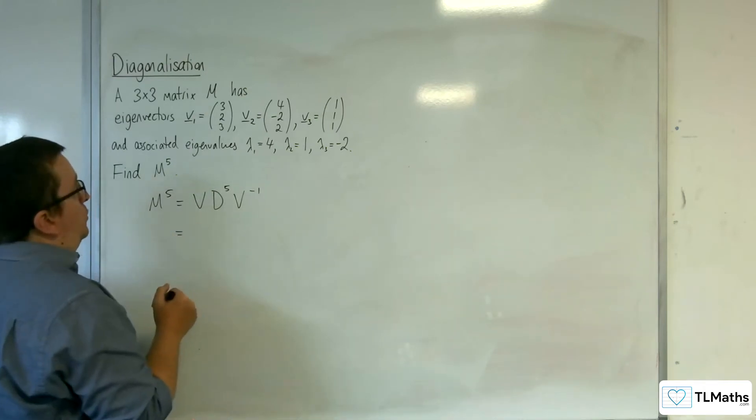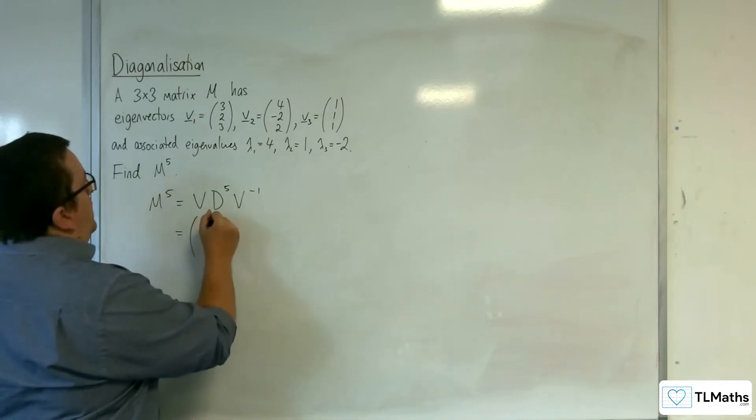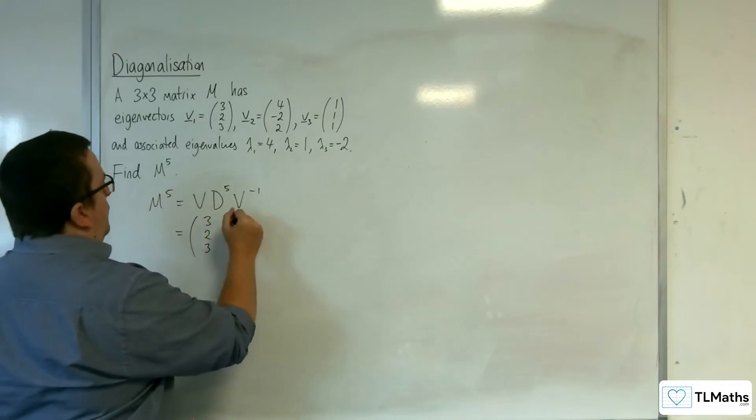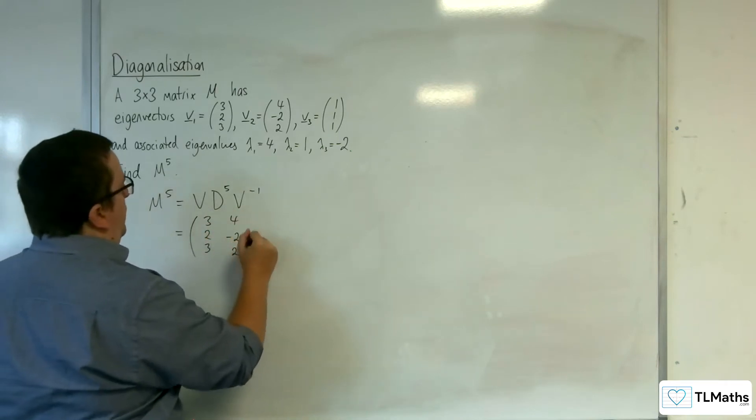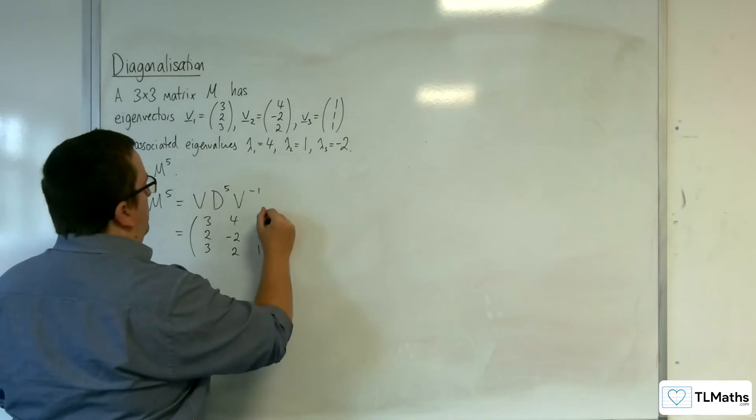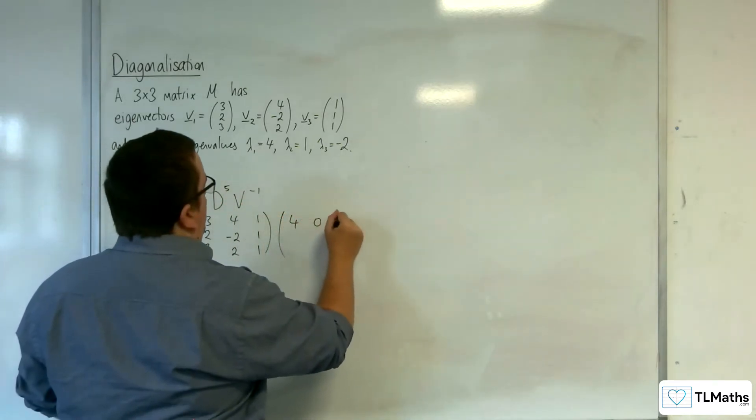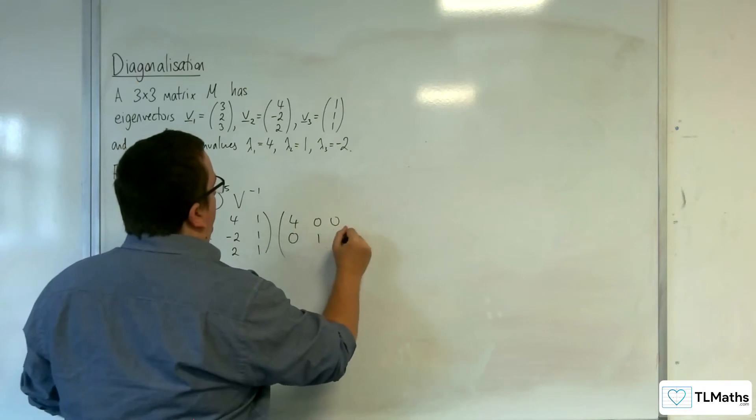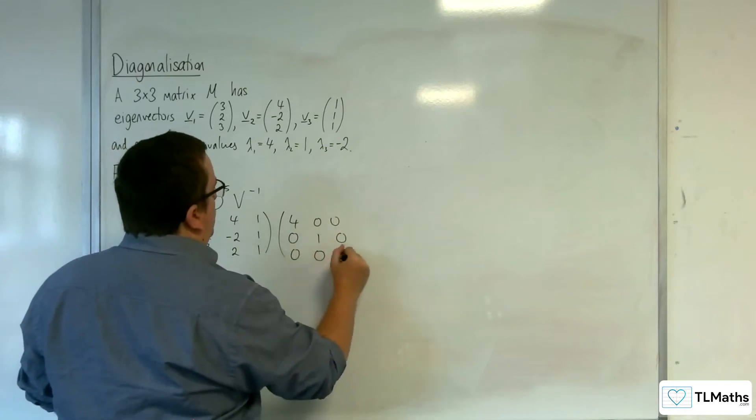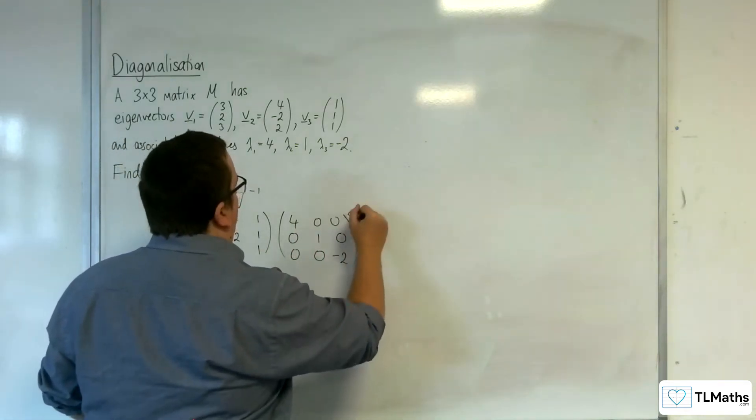going to be equal to 3, 2, 3; 4, minus 2, 2; 1, 1, 1, times 4, 0, 0; 0, 1, 0; 0, 0, minus 2 to the power of 5,